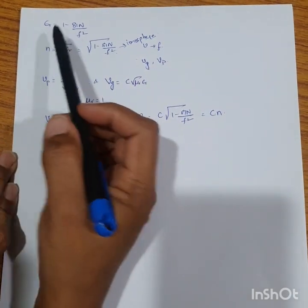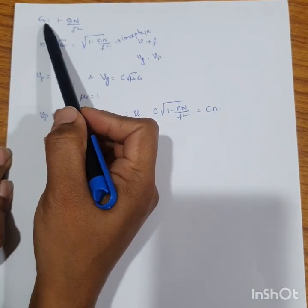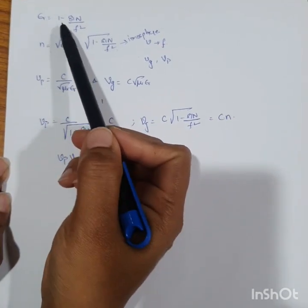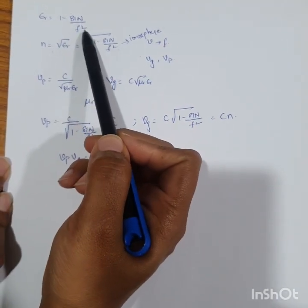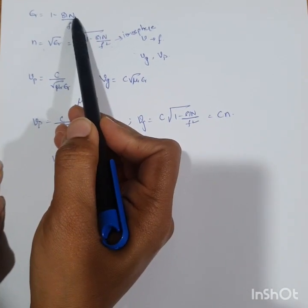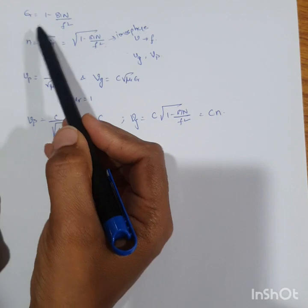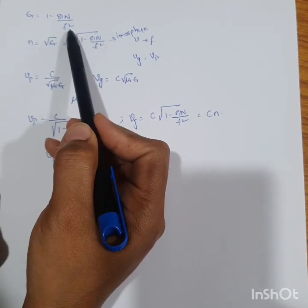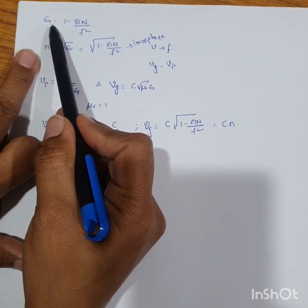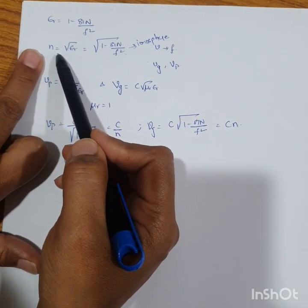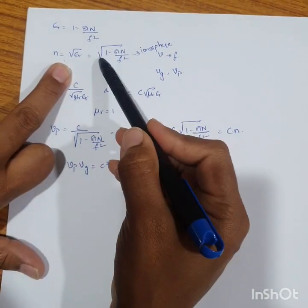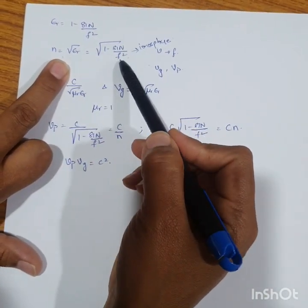In the previous video we derived the expression for the relative permittivity of the ionosphere. The expression for epsilon_r is 1 minus 81n by f squared, depending on two terms: the ion density in the particular layer of the ionosphere and the frequency of the electromagnetic wave. From this relative permittivity expression we can obtain the refractive index of that medium, which is n equals the square root of epsilon_r, that is the square root of 1 minus 81n by f squared.